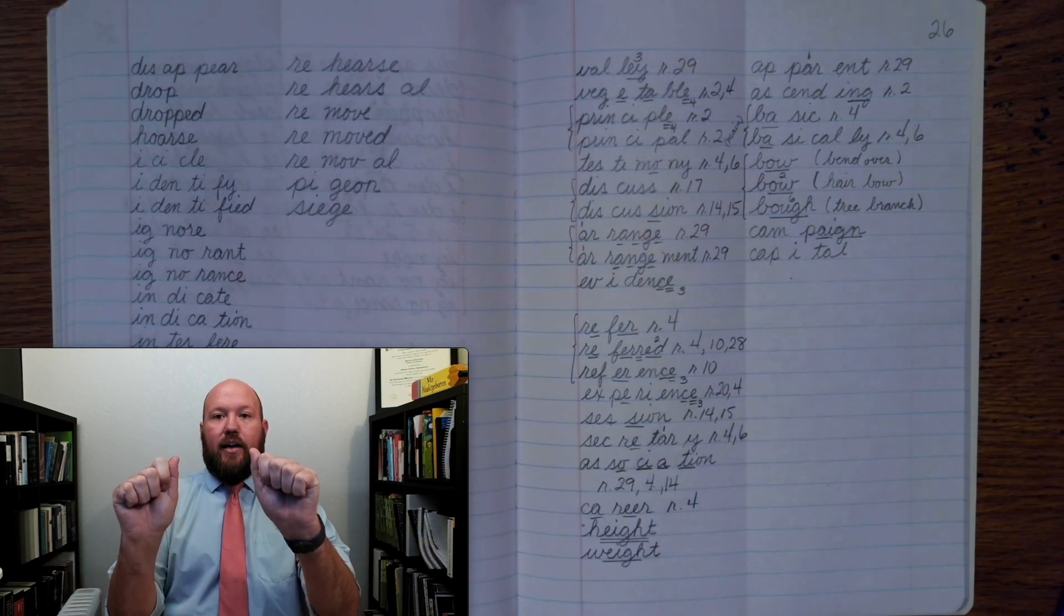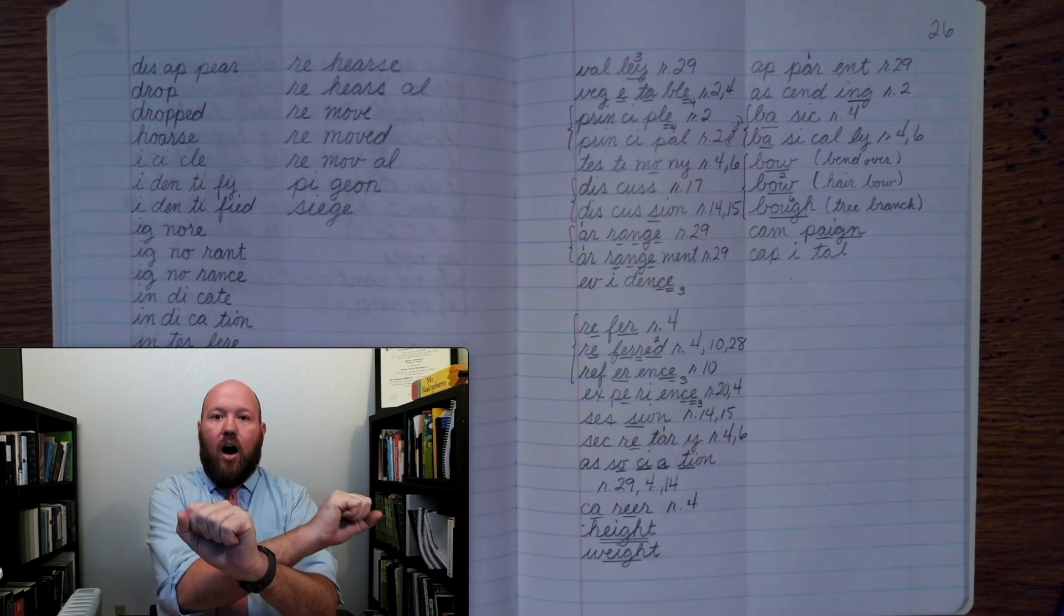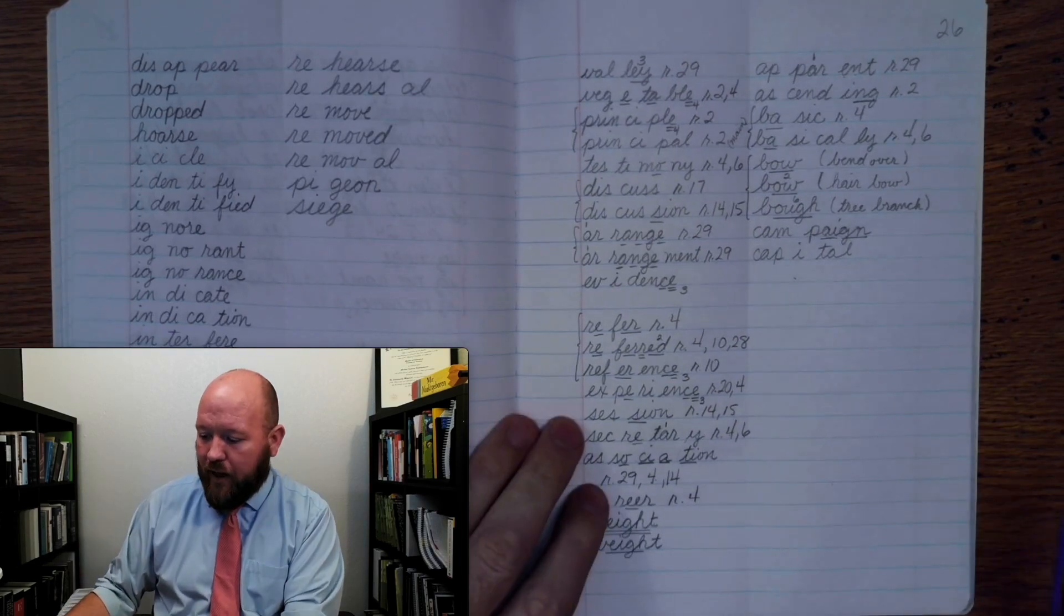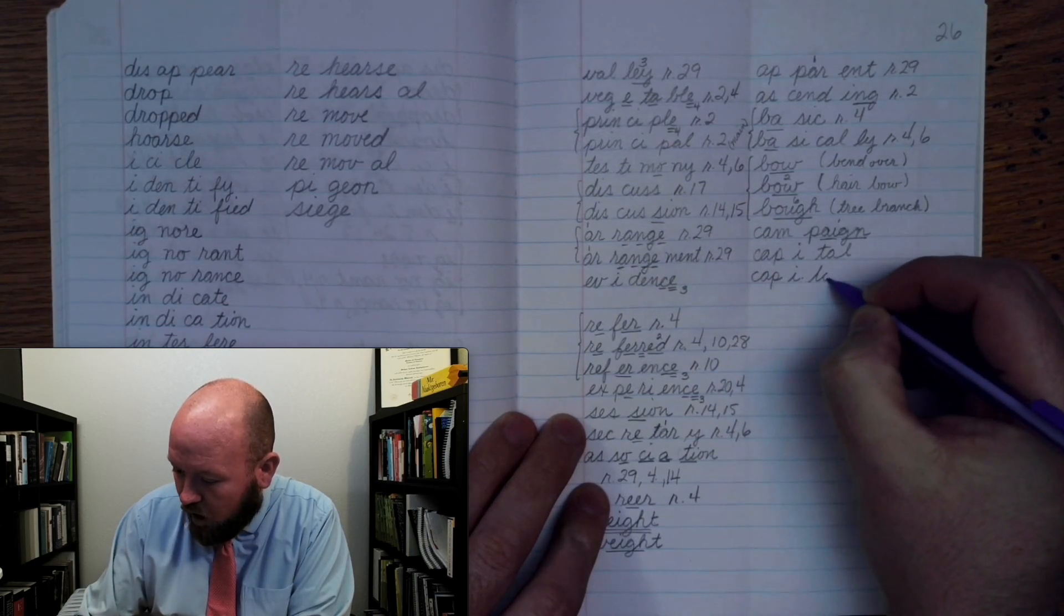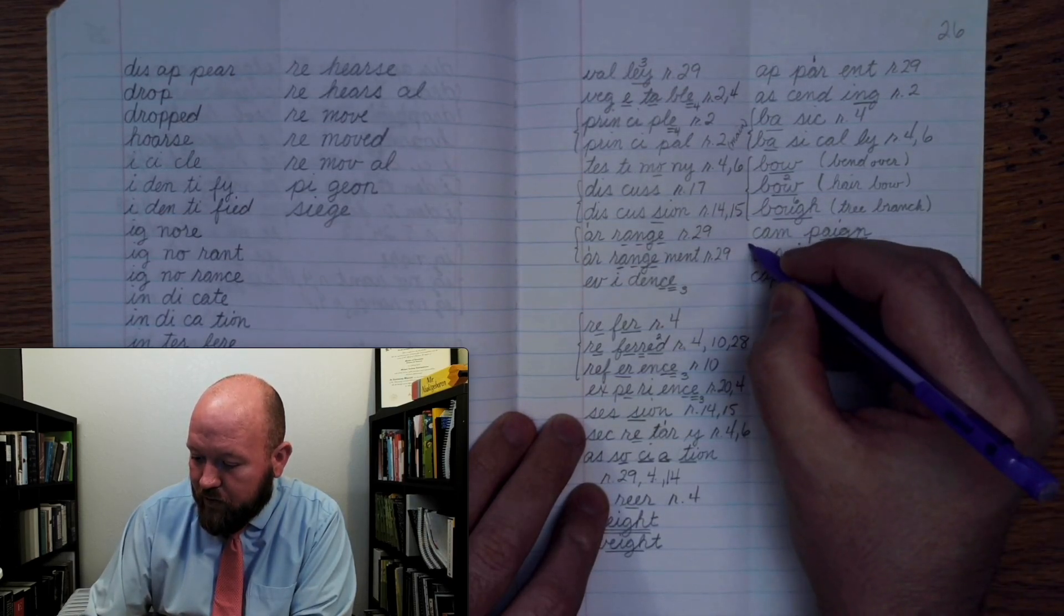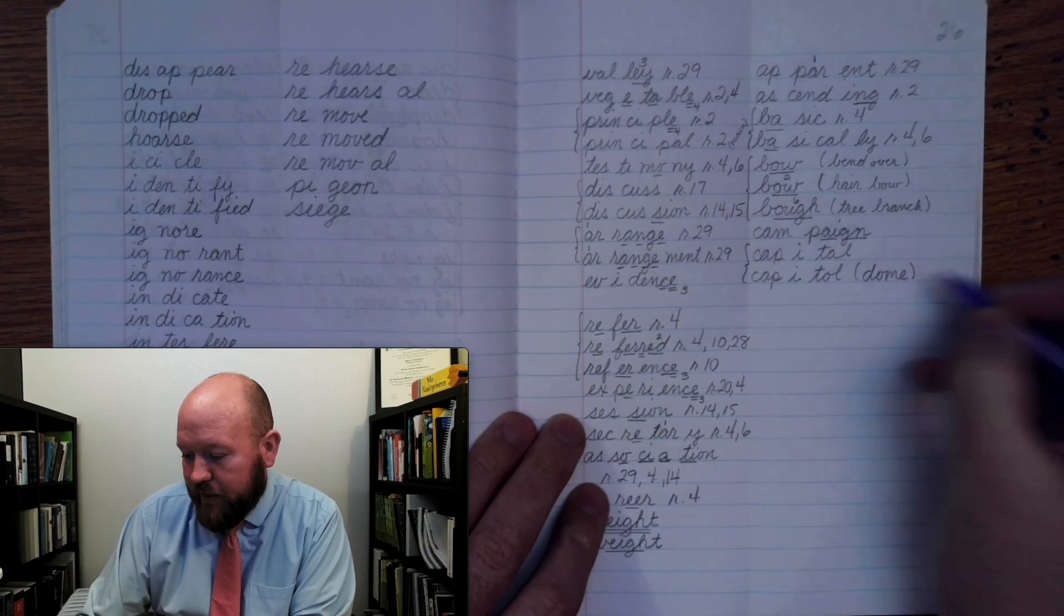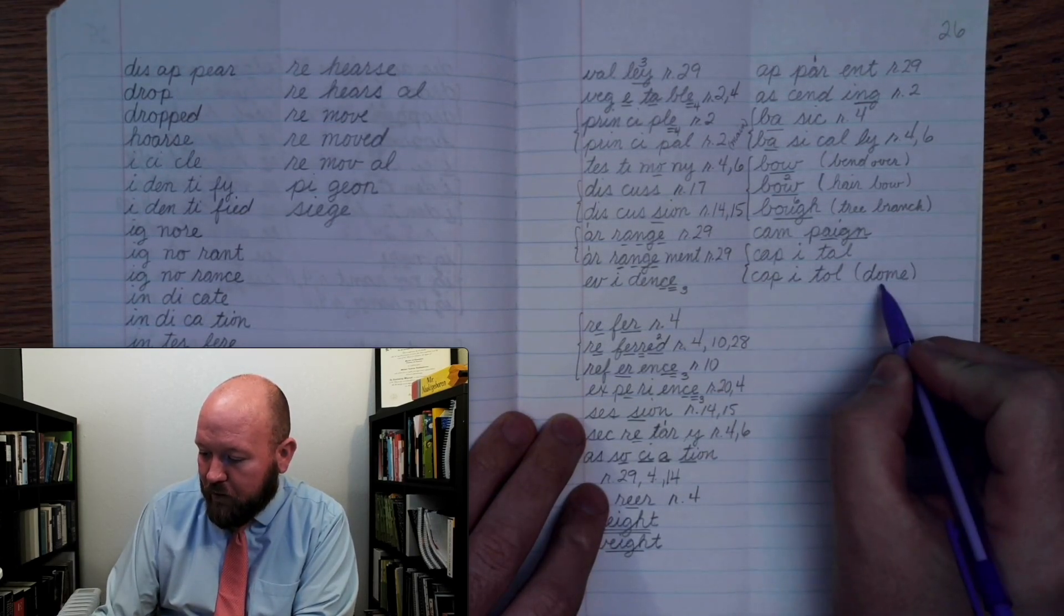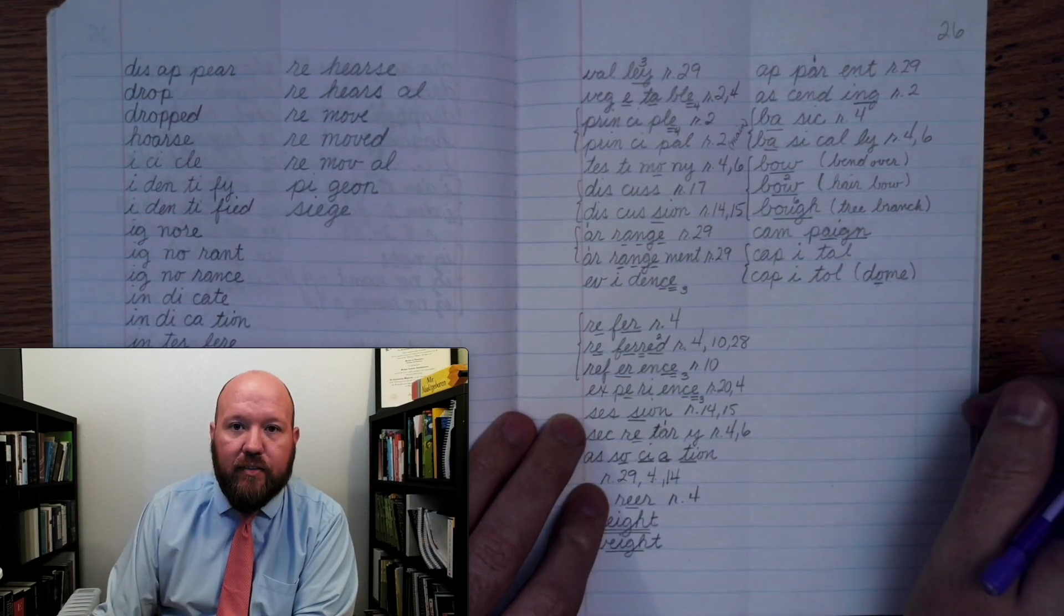Now the next one is capital, like the capital of a state. It is capital, or tall cap. Cap it tall. Capital. Capital. Now one way to help remember this is if you've ever seen the capital building of the United States, it has a dome at the top of it, and so one way to remember is that a capital like a capital building or a capital of the state is going to have an O in it because capital buildings often have a dome.